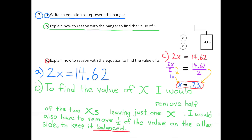Problem 3C: Explain how to reason with the equation to find the value of x. On the right-hand side underneath the hanger, I wrote in red: 2x equals 14 and 62 hundredths. I would divide the 2x by 2 to make just one x, because I want to find the value of just one x. And since I divided the 2x side by 2, I'd need to divide the other side by 2. So 14 and 62 hundredths divided by 2 is 7 and 31 hundredths. The value for one x on that hanger would be 7 and 31 hundredths.